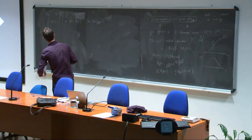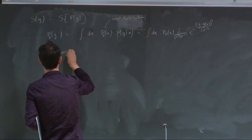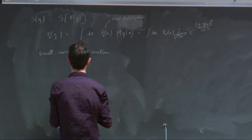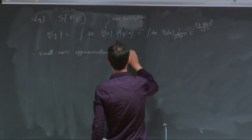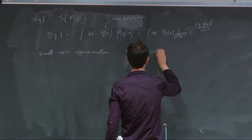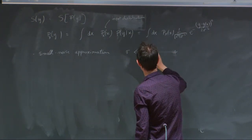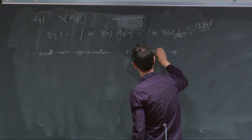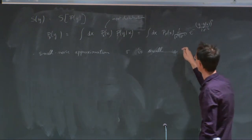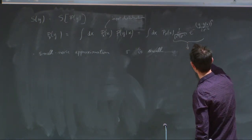We'll do a small noise approximation, meaning sigma is very small. What this allows me to do is to approximate the noise distribution with a Dirac delta function. Then I do a change of variable: y prime equals g of x.